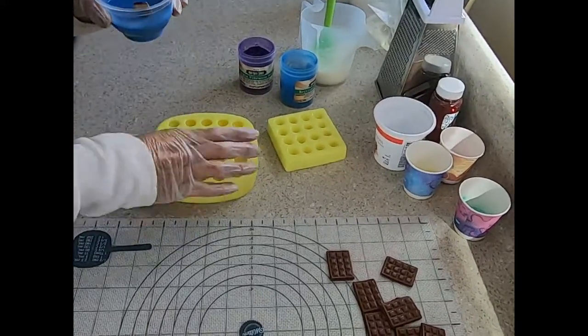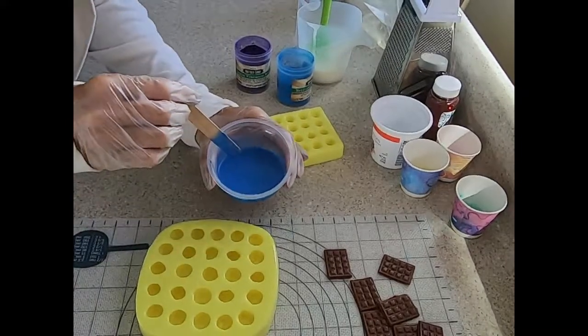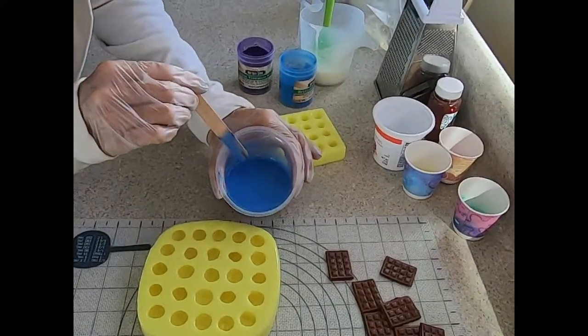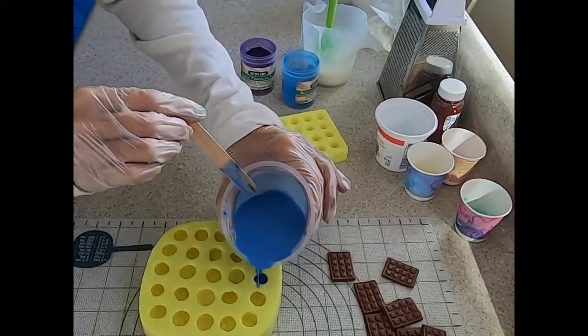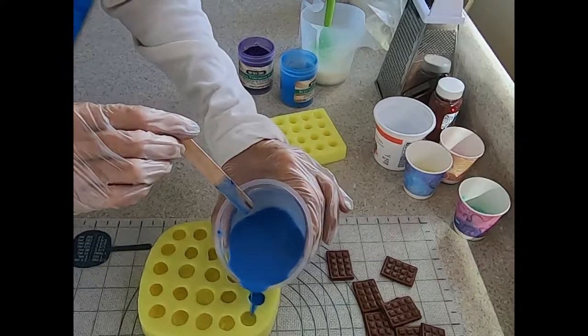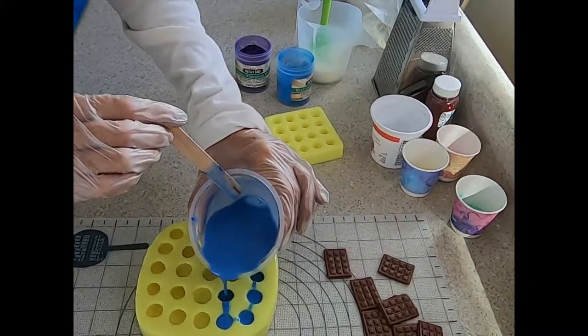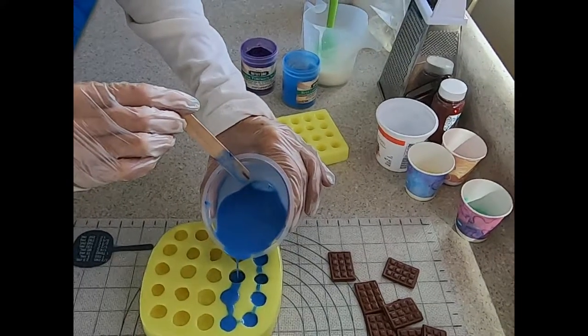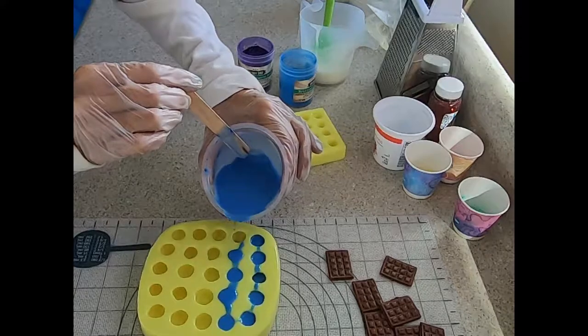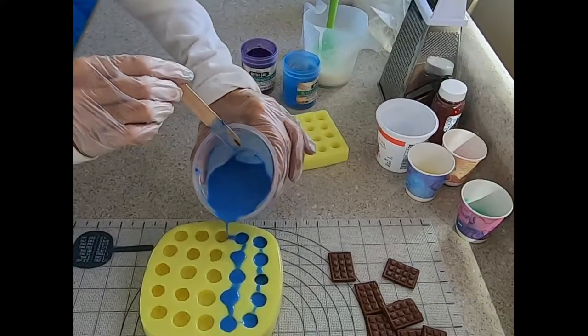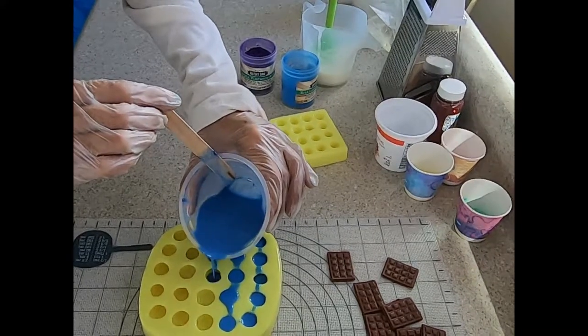So now we're going to pour and we're going to pour relatively quickly and I tend to get messy and it's okay if it doesn't fill up all the way. These are going to get stuck into soap frosting. So you're not going to see the bottoms of them. The tops now bottoms later of the soap. And if I make too many, that's okay. Save it for something else.